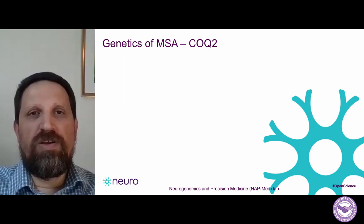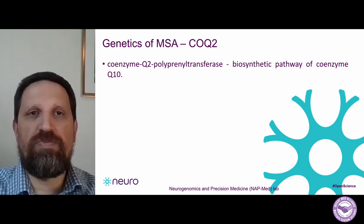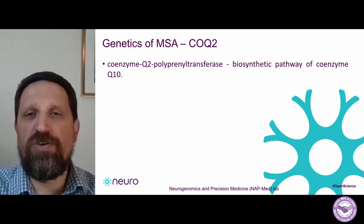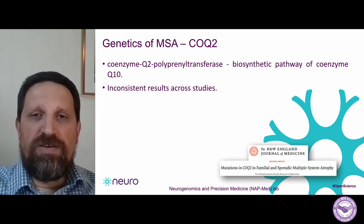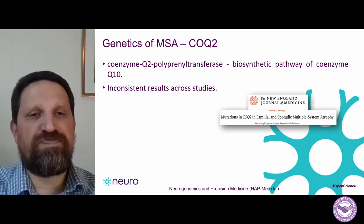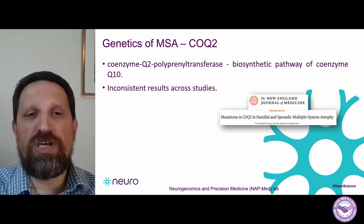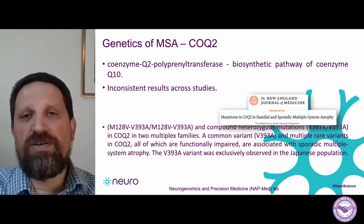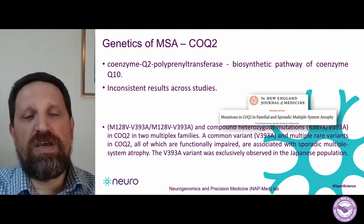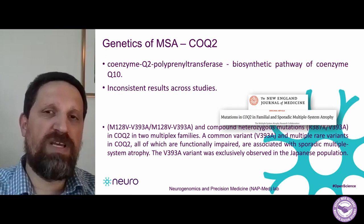The next gene I would like to talk about is called COQ2. It encodes the enzyme coenzyme Q2 polyprenyl transferase, which is important in the synthesis of Q10 that I'm sure you've heard about. The biggest and most important study done on COQ2 several years back suggested that in some families, people who carry two mutations in this gene have higher risk to develop multiple system atrophy. The authors reported on a common variant, the V393A, but also other rare variants in this gene that affect the activity of this enzyme and are associated with multiple system atrophy.